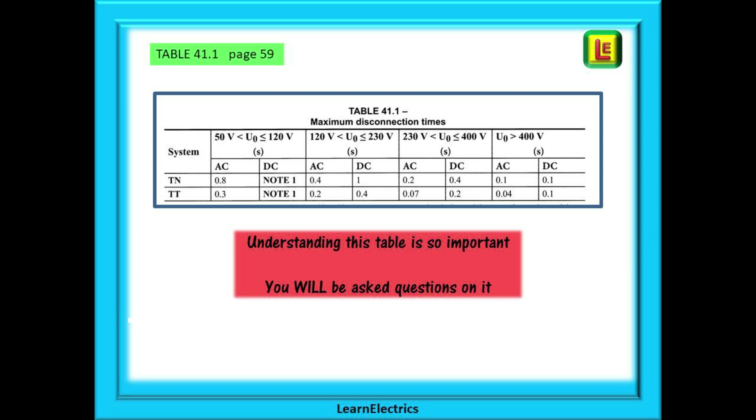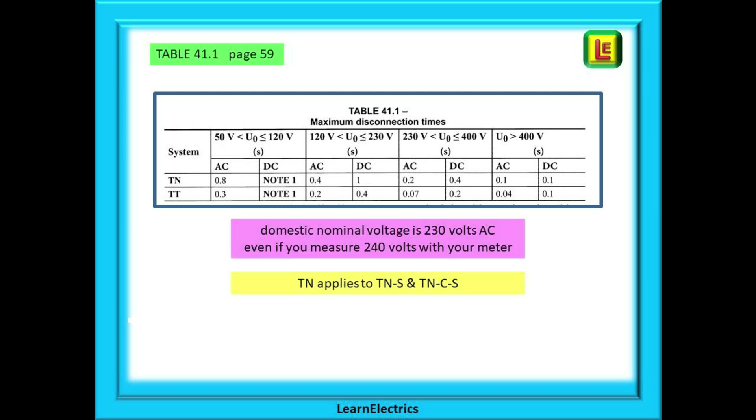Understanding Table 41.1 is also very important. You will be asked questions on it, guaranteed. The voltage ranges need careful consideration. A domestic household will have a nominal voltage of 230 volts. This is what we call it. This 230 volts is what we base our calculations on even if the actual voltage is 240 volts. And the letters TN mean that this row of data applies to both TNS systems and to TNCS systems. Looking at the voltage columns, we've highlighted the range 120 volts to 230 volts. This is where to look for most domestic installations. The writing in the red box tells us the nominal voltage is over 120 volts and up to and including 230 volts.